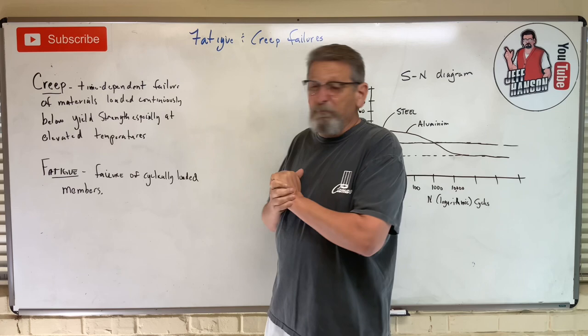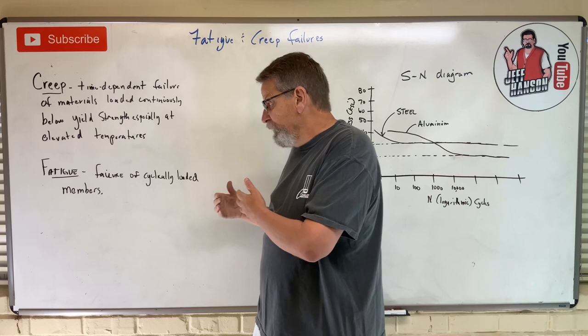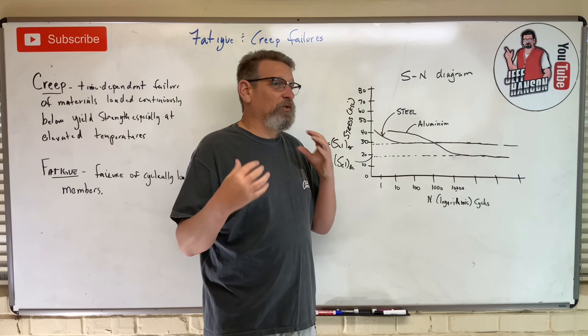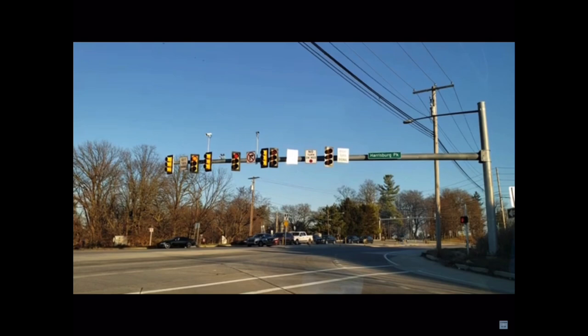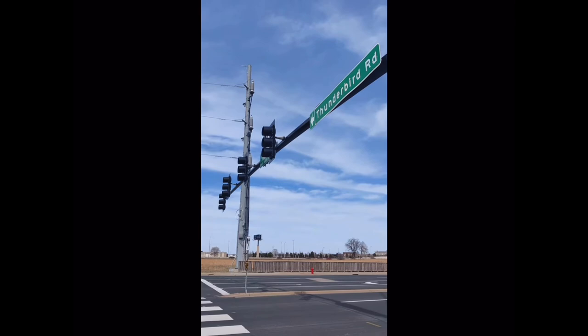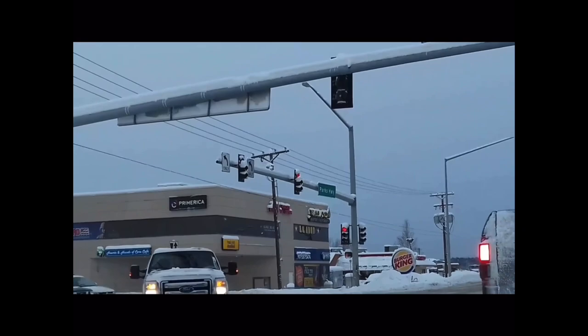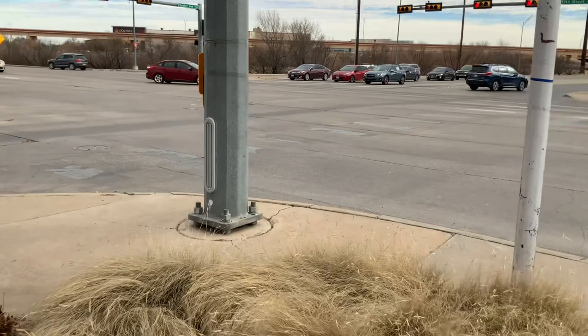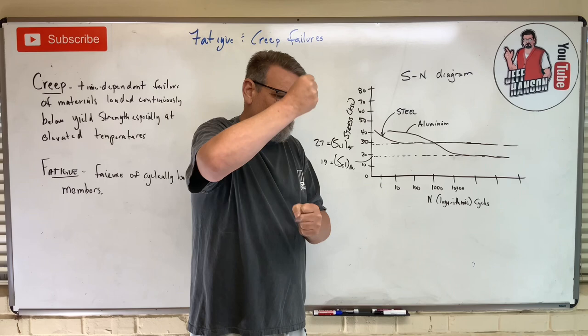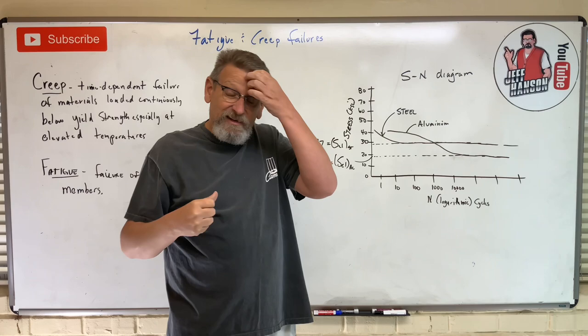The second one, which you may be more familiar with, is fatigue. Fatigue is the cyclical loading of members. One of the things I see here all the time, especially in West Texas when the wind blows: notice how the traffic lights start oscillating. Where those traffic lights are connected to the ground, those bolts are going under tension, compression, tension, compression, tension, compression as that beam cycles up and down. On the downward it's in tension; on the upward it's in compression. So that loaded member is just being compressed and stretched, compressed and stretched, compressed and stretched.